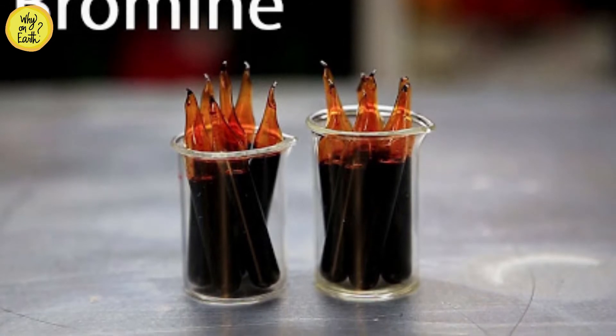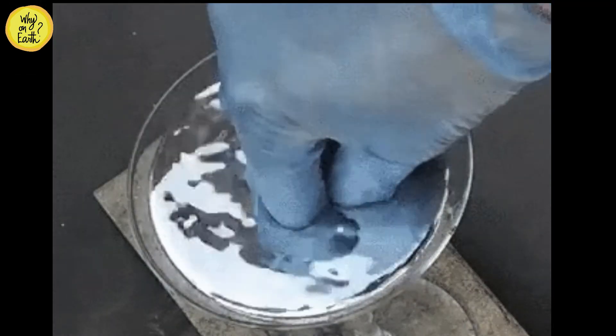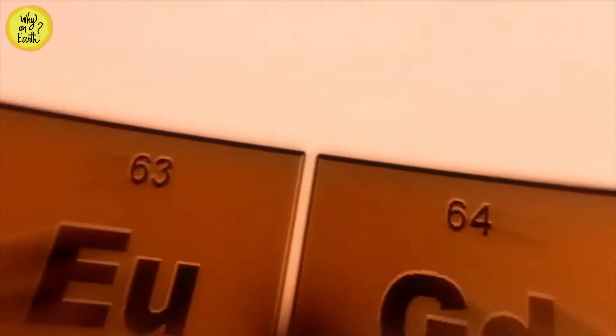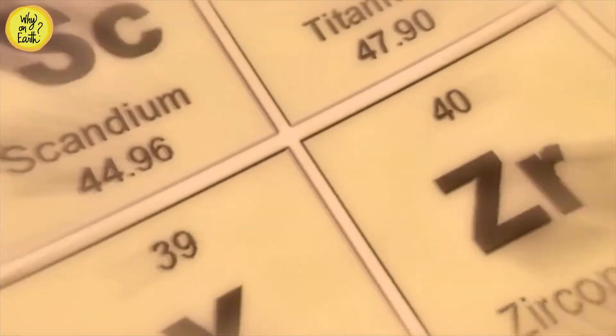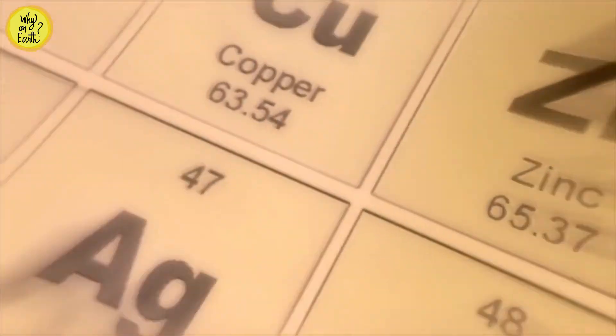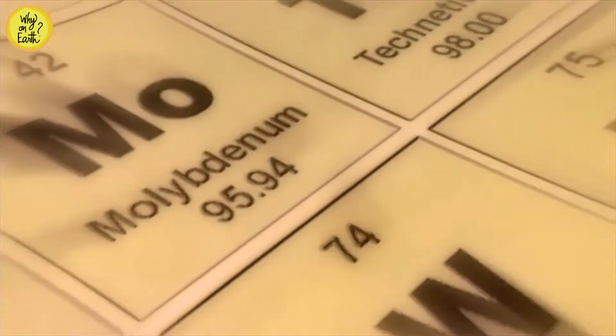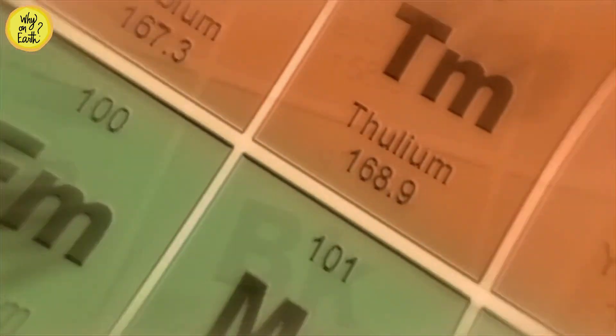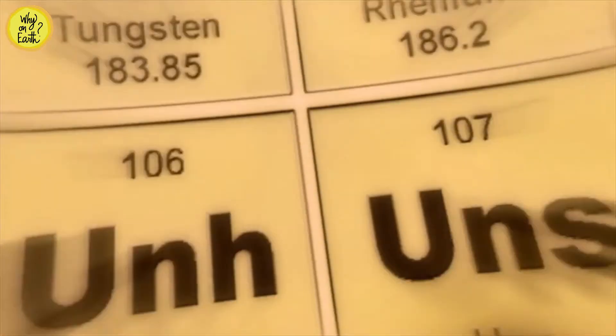While mercury is the only liquid metal at room temperature, the elements gallium, cesium, and rubidium melt under slightly warmer conditions. If scientists ever synthesize a sufficient amount of flerovium and copernicium, these elements are expected to have an even lower boiling point and perhaps melting point than mercury.